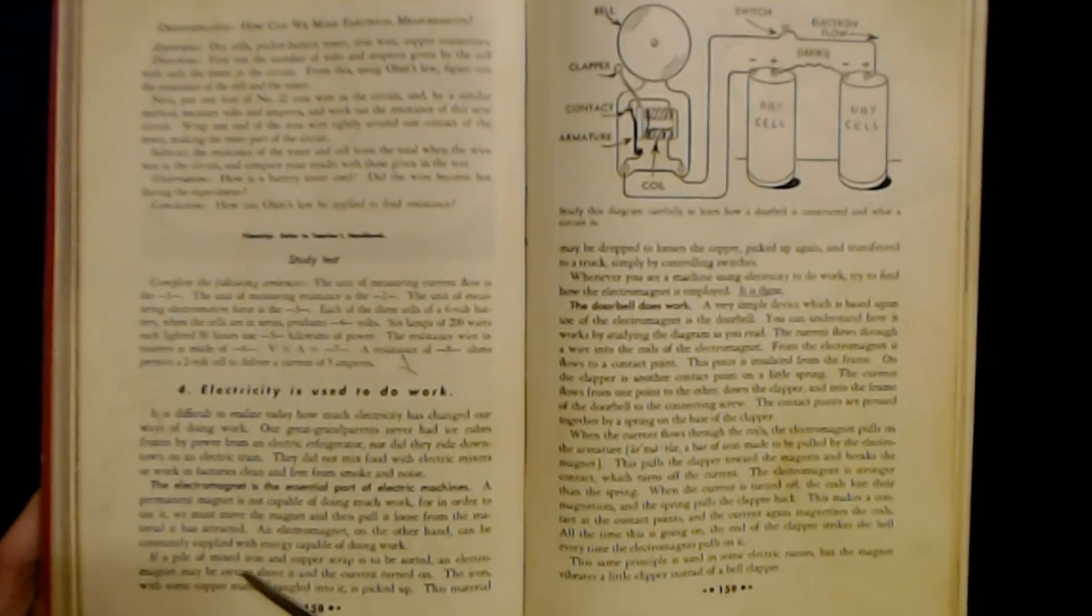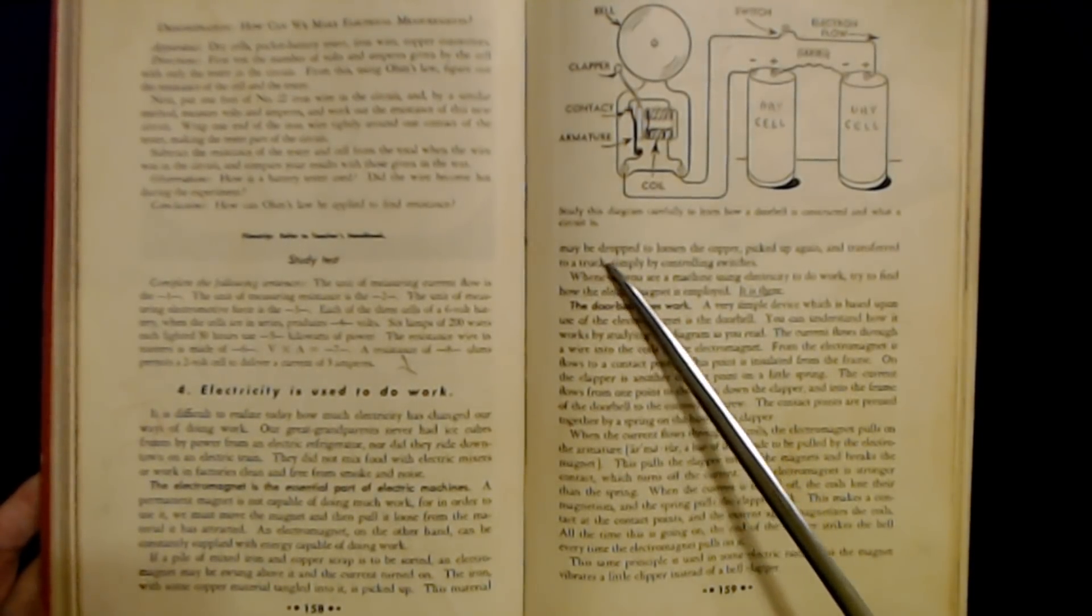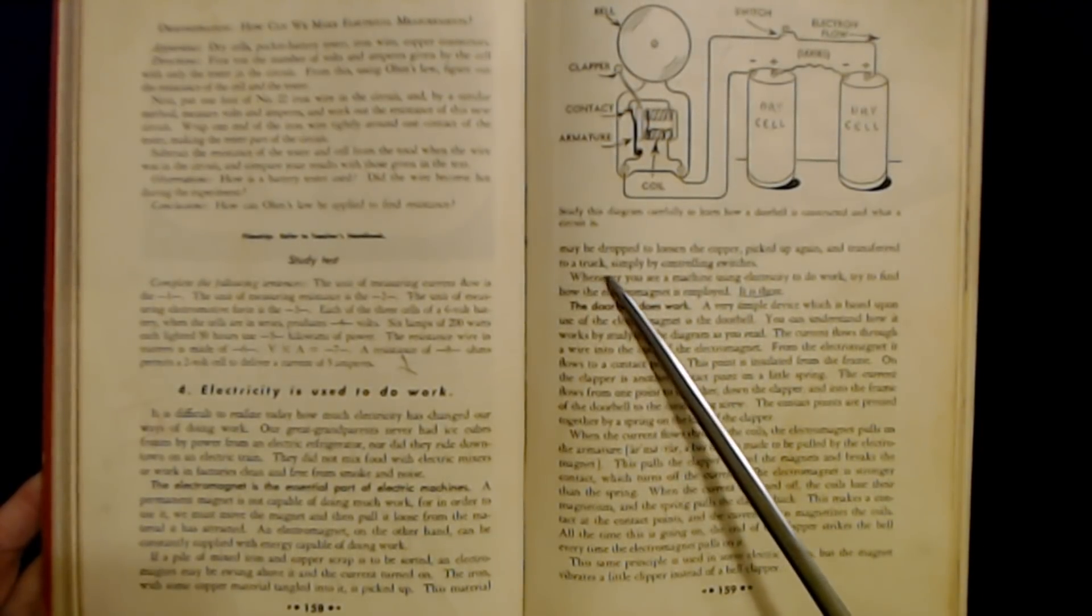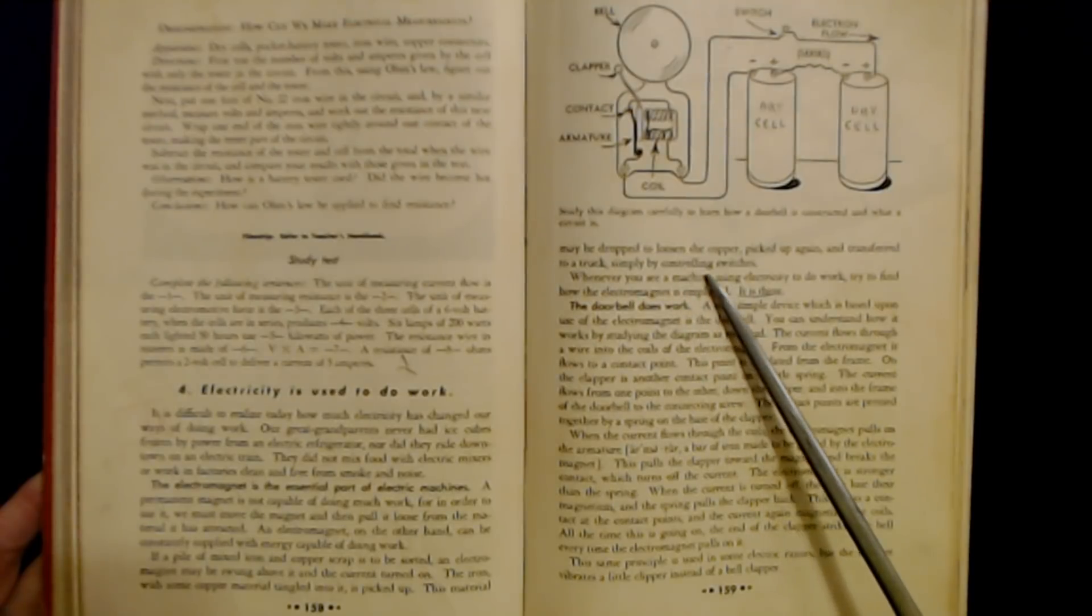If a pile of mixed iron and copper scrap is to be sorted, an electromagnet may be swung above it and the current turned on. The iron, with some copper material tangled into it, is picked up. This material may be dropped to loosen the copper, picked up again, and transferred to a truck simply by controlling switches.